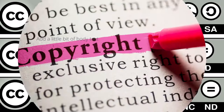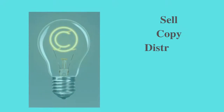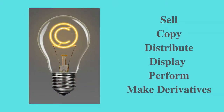In order to talk about creative commons licenses, we first need to know a little bit about U.S. copyright law. Under the U.S. federal code, copyright owners have an exclusive set of rights over the works they create. Generally speaking, those rights include the right to sell, copy, distribute, display, perform, and make derivatives. Most creative commons licenses allow copyright holders to share those normally exclusive rights with others while still maintaining their underlying copyright ownership.